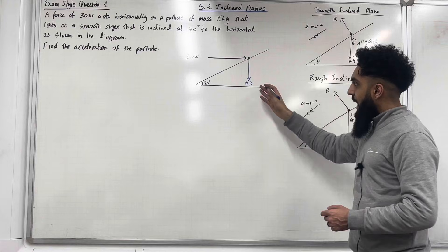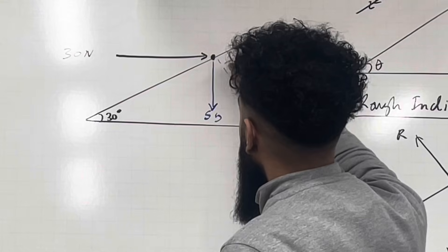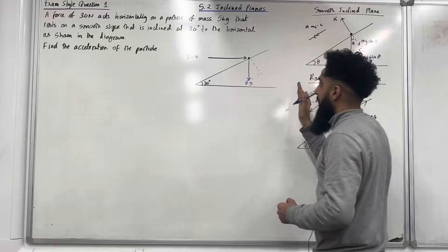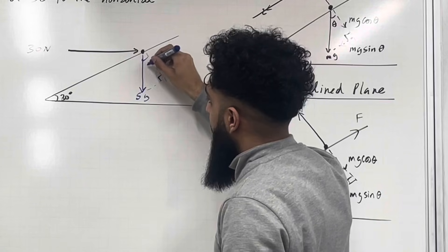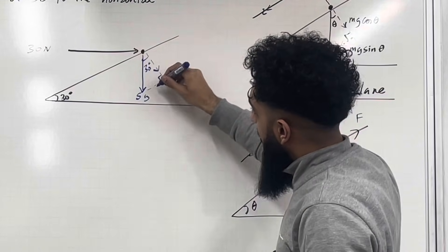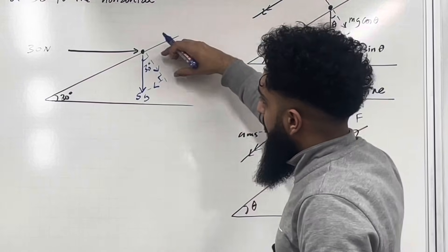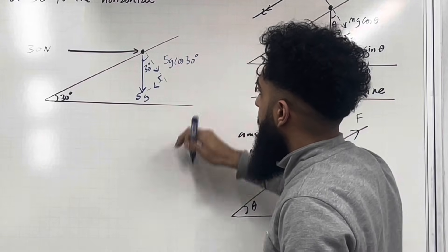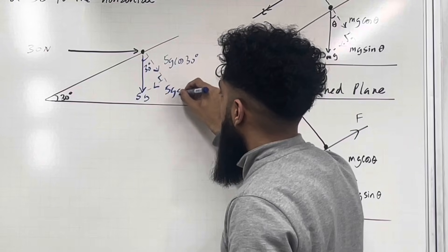This weight has component forces. The component perpendicular to the plane and the component parallel to the plane. We have a 90-degree angle here, and it can be shown that this angle is 30 degrees. Make sure you put the arrows in the correct direction. The perpendicular component represents the adjacent, so it is 5g cos 30 degrees. The parallel component is the opposite, so it is 5g sin 30 degrees.